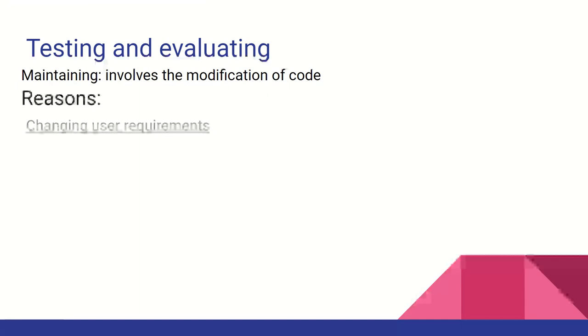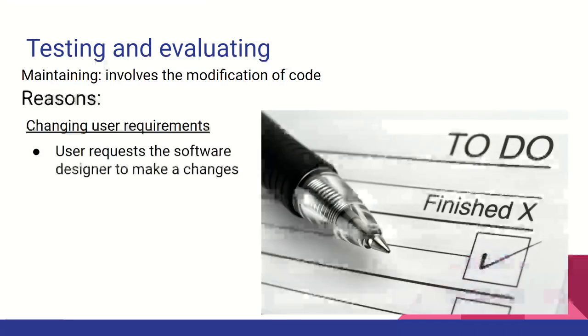Once we have created the software solution, it is vital that we maintain it for our end users. Maintenance involves the modification of code. The main reasons we maintain code are changing user requirements. The users are the people who use the solution. If a user requires a modification, it is a programmer's job to make that change within the solution.